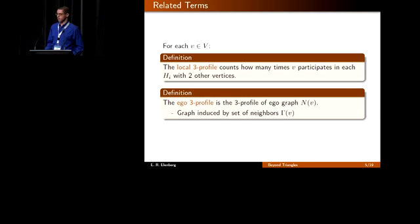We can also take the three profile of only the ego graph of a given vertex. Here the ego is the induced graph by the neighborhood set of a given vertex. This is a slightly harder problem involving four subgraphs. There are more details in the full paper, but I'll only mention it briefly here.